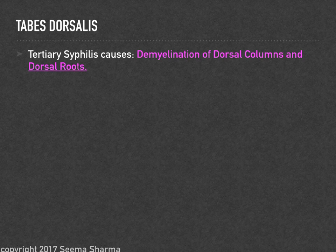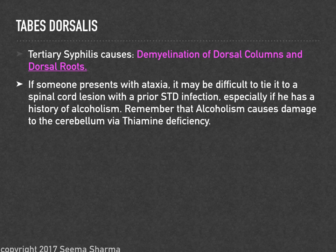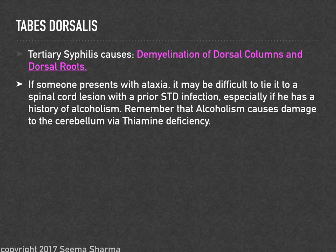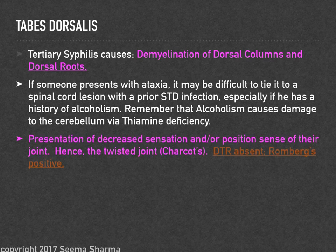Tabes dorsalis is when tertiary syphilis causes demyelination of the dorsal columns and dorsal roots — this is a long-standing infection. When reading about ataxia, be careful: it can be tempting to associate it with cerebellar ataxia caused by alcoholism or thiamine deficiency, but that's a very different phenomenon from tabes dorsalis.